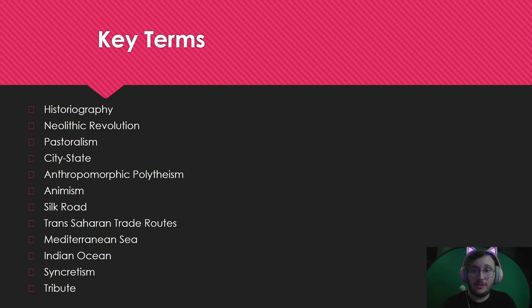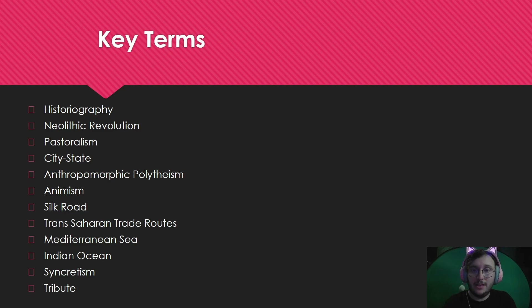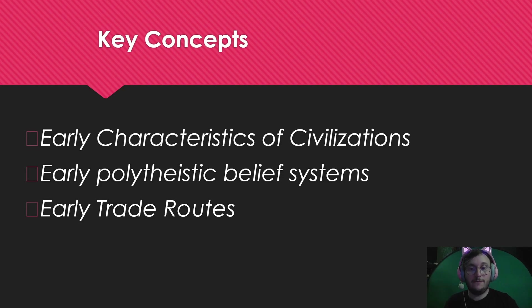Key terms are things that will be on the warm-up quizzes, which cover the videos. They're historical terms you should know — things you're going to use in your essays and conversations in class. They're concrete details and illustrative examples. We're going to go over three big things today: some of the early characteristics of the first civilizations, early polytheistic beliefs, and early trade routes.